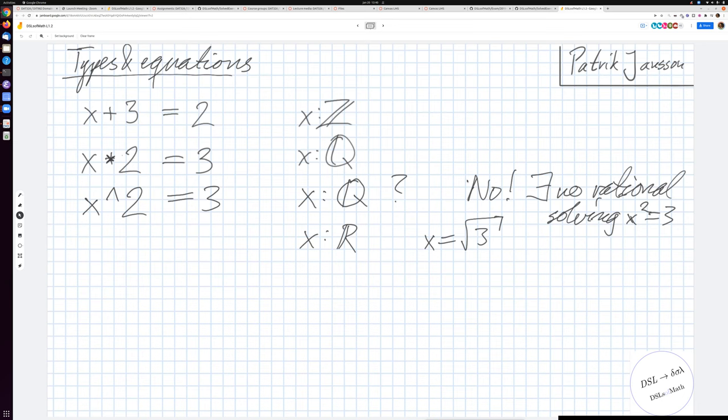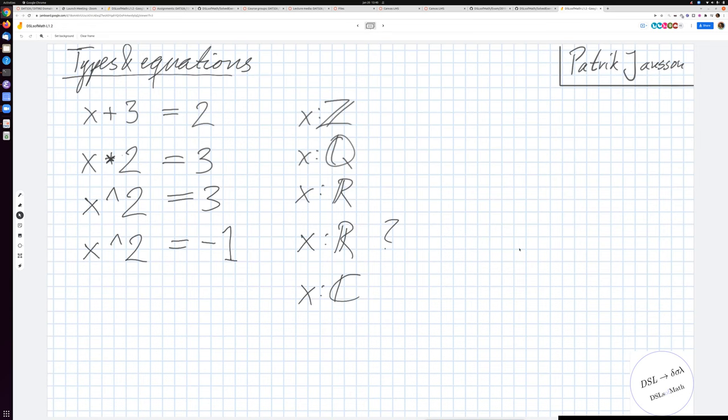So if we move from rationals to real numbers, we can also solve a number of these equations involving roots of positive numbers. But you might guess where this is going. It's clear that there are still equations we cannot solve even here. So we if we just make the very small change of saying that the right hand side should be minus one instead of three, we say minus one. And we ask again, can we find an x which is a real number? And then we will again have to answer nope.